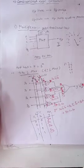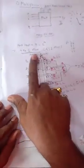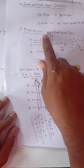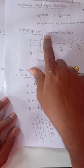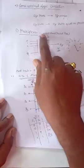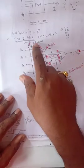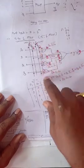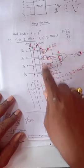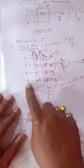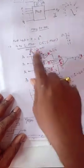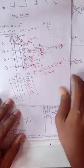Good morning. Last time we started the multiplexer and saw the 4-to-1 line multiplexer. The multiplexer has a number of inputs and select lines. The data input lines and select lines are both inputs. By giving a code to the select line, we can select one of the inputs and connect it to the output. This is the multiplexing action. Last time we saw the 4-to-1 multiplexer and how to make connections between select lines and AND gates.